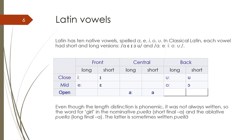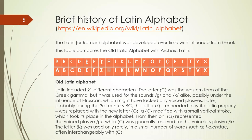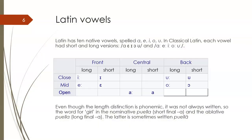Even though the length distinction is phonemic in Latin, it's somewhat predictable. The word for 'girl' in the nominative case is 'puella' with a short final a, and in the ablative case 'puella' with a long final a — but in old Latin inscriptions these are written the same, just with the letter A. Today we sometimes write the ablative form with a macron over the a to indicate length, but the ancient Romans didn't do that.